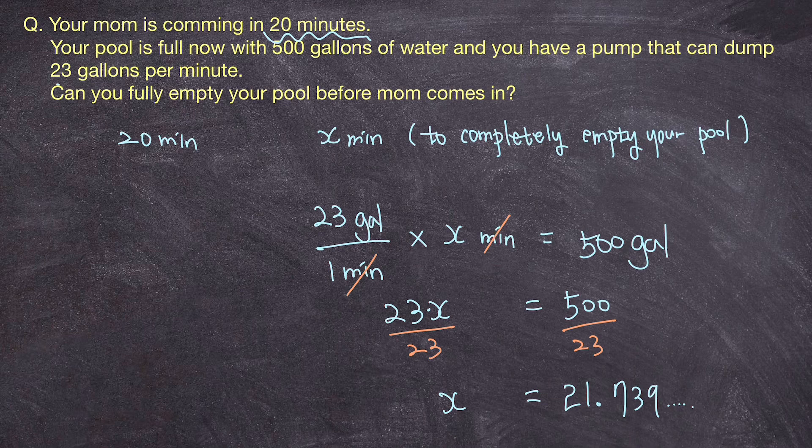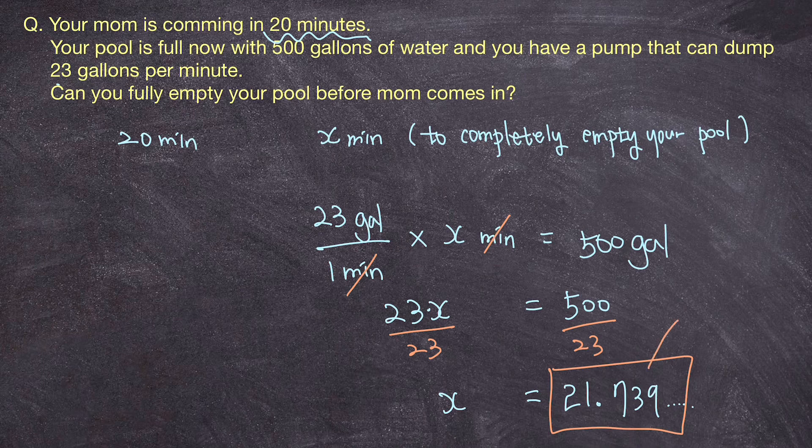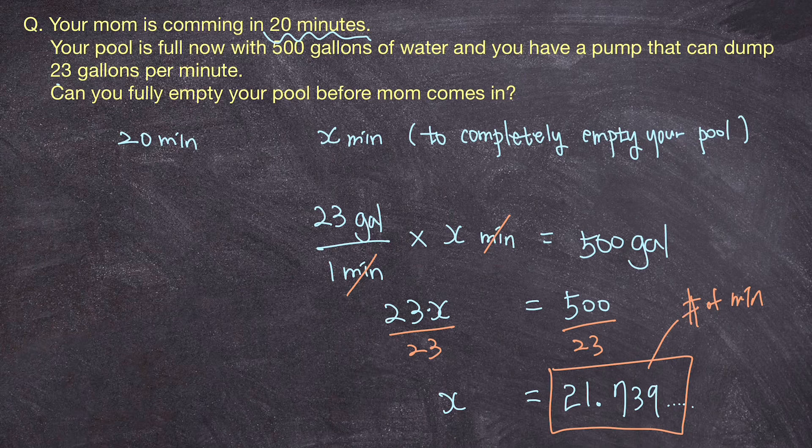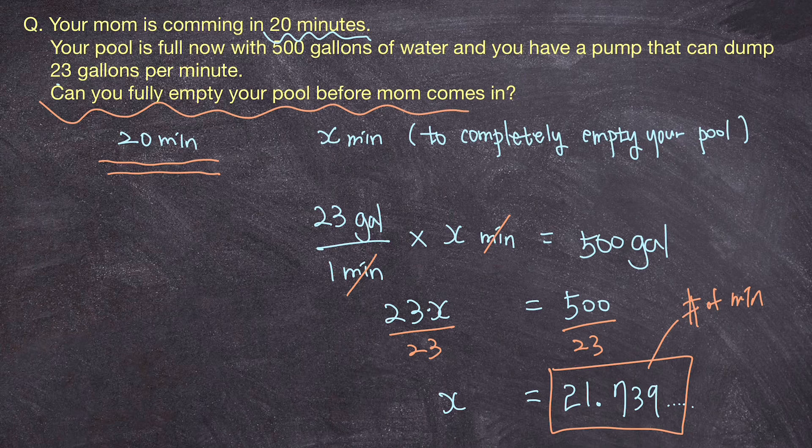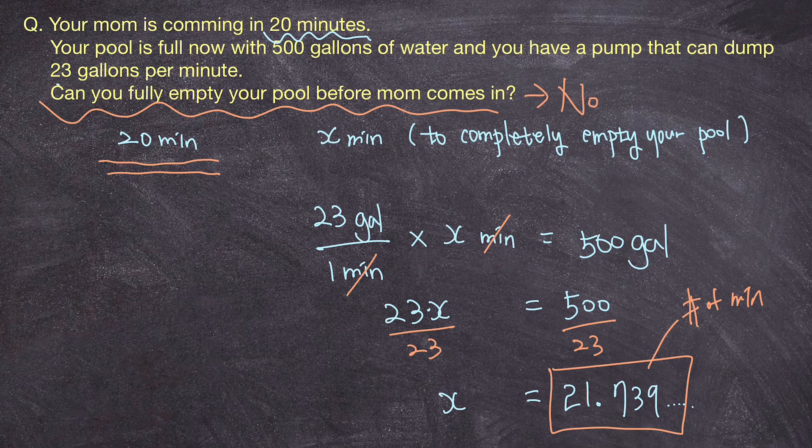And what do you think this number refers to? That's the number of minutes for you to completely dump out all 500 gallons of water in the pool which means it'll take more than 20 minutes. And to answer the question: No, you won't be able to fully empty your pool before your mom comes in because it'll take more than 21 minutes and your mom is coming in 20 minutes. So you won't be able to fully empty your pool. You'll have some water left out when your mom comes in in exactly 20 minutes. So the final answer is no.